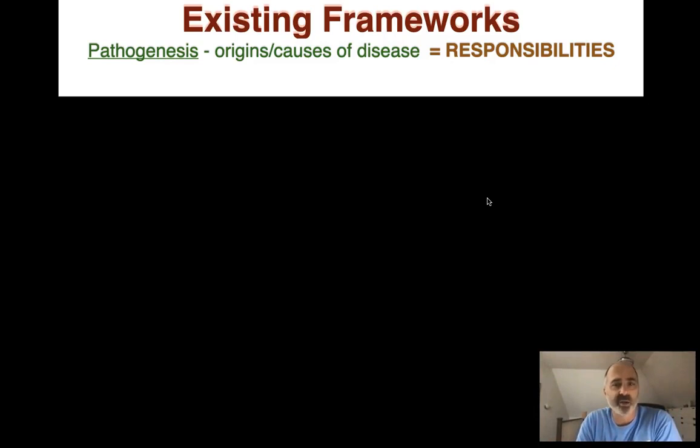Now you know the existing frameworks. Pathogenesis is about the origins or causes of disease. These are really about a lot of responsibilities. We have a responsibility not to walk in front of a bus if it's coming down the street, and doing the right things that we know give a higher probability of causing problems. But most of us have an awful lot of responsibilities — we don't really want more, but we need to do the right things.